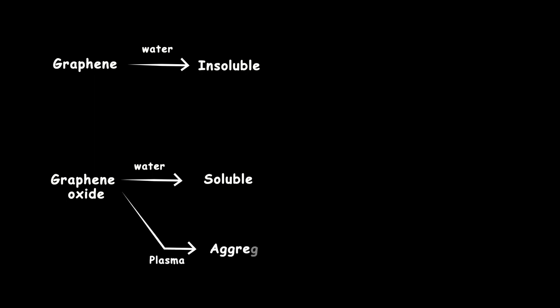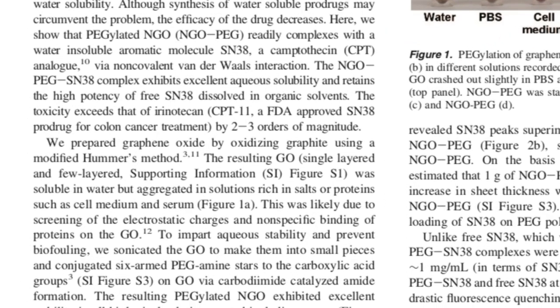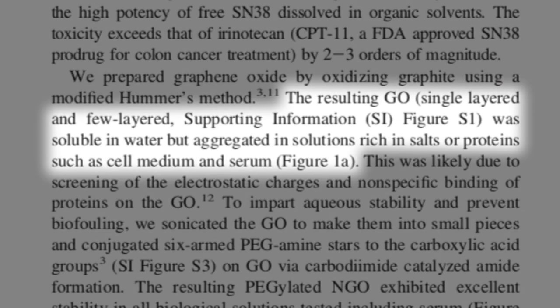In contrast to graphene, graphene oxide shows great solubility in water, but if we want to inject this material into the body, we should check it in plasma and serum. They observed that the graphene oxide aggregates in these environments, which is probably caused by the presence of salt and some proteins in plasma.